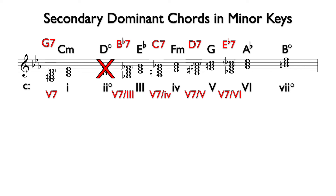Since 7 diminished is a diminished triad, it will not feel like 1 in a major or minor key. Therefore, there is no 5 of 7 diminished.